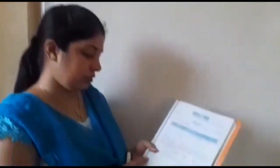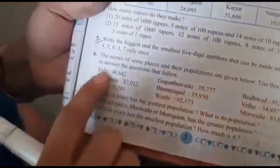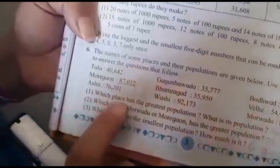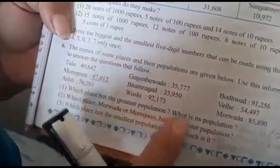Now students, we are going to see question number 6 with the help of textbook. This is very simple question, so you have to do this question by yourself. What is the question? The names of some places and the populations are given. Use this information to answer the questions that follow. These are some places, name of some places and the population is given. We have to use this information and answer these 3 questions. Just read the name of these places and read the numbers, then read the question. First question is: which place has the greatest population? What is its population?